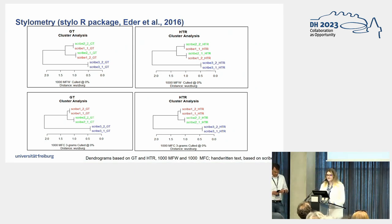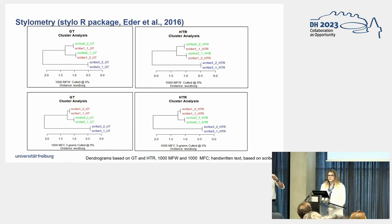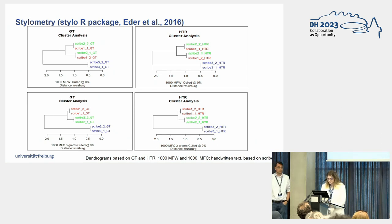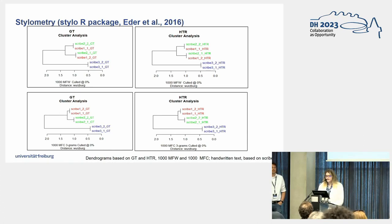We performed statistical analysis on both HTR and ground truth for handwritten and printed text and compared the results, using the ground truth as a benchmark. We started with stylometric cluster analysis using 1,000 most frequent words and 1,000 most frequent character trigrams. For the handwriting results, we divided the text among the three scribes involved in the writing process, and found no differences between ground truth and HTR.